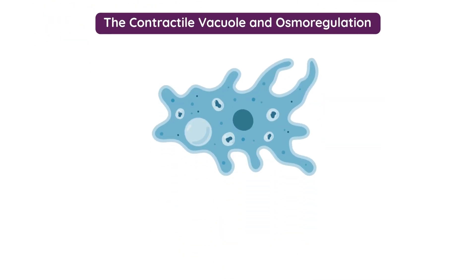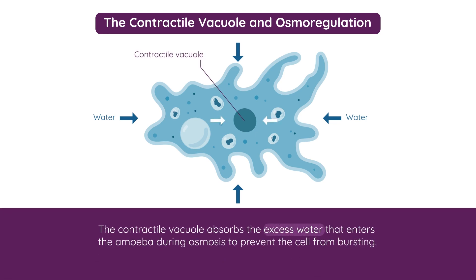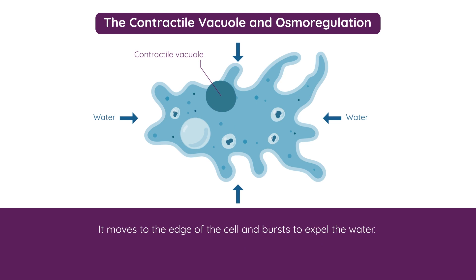Now let's look at the contractile vacuole as a means of osmoregulation. Amoeba's cytoplasm is far more concentrated than the surrounding fresh water that it lives in. As a result, water constantly rushes into the cell by osmosis. If amoeba did nothing about this, water would continue to enter the cell until the cell membrane would eventually burst and the organism would die. In order to deal with this constant uptake of water, amoeba forms an organelle called a contractile vacuole. Excess water enters this contractile vacuole, which swells with water and moves to the edge of the cell, where it eventually bursts and expels the water, and the cycle is then repeated.